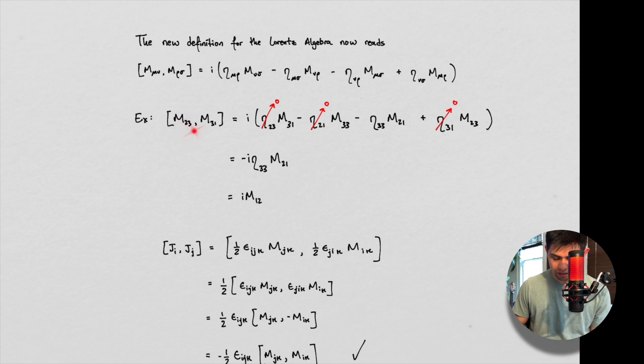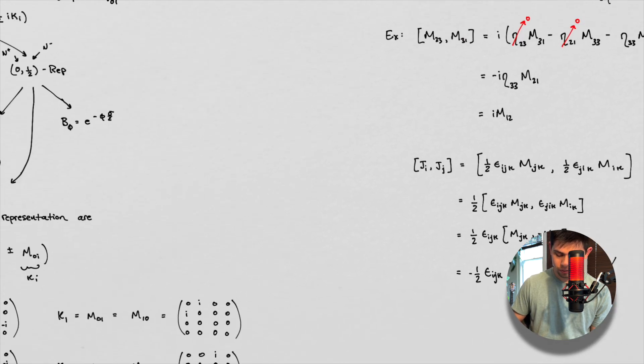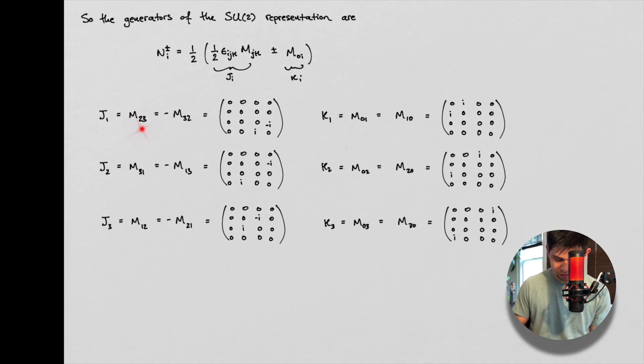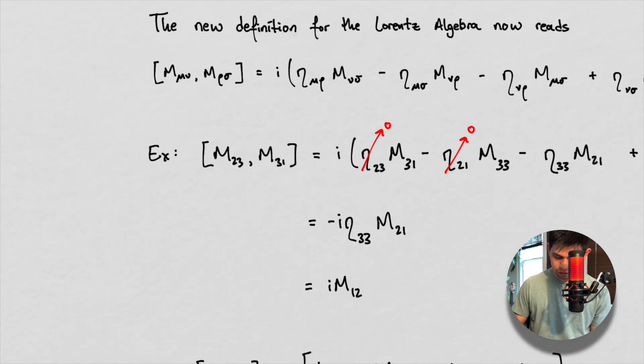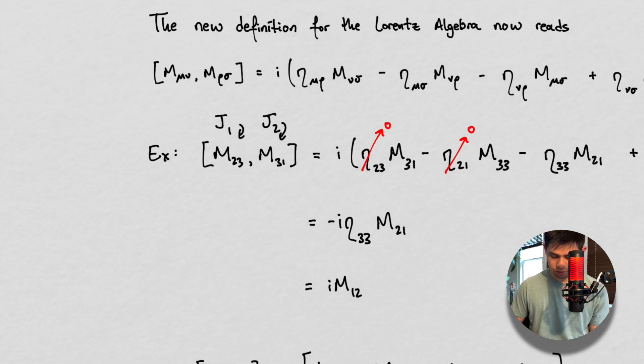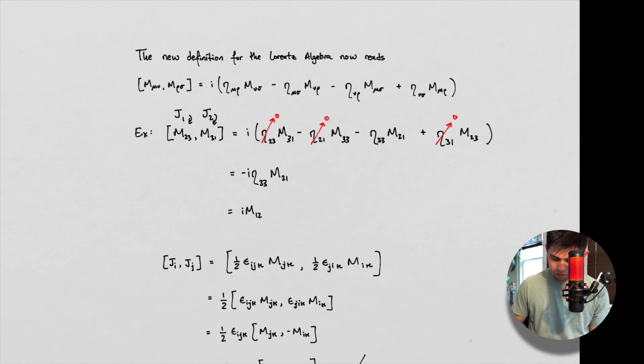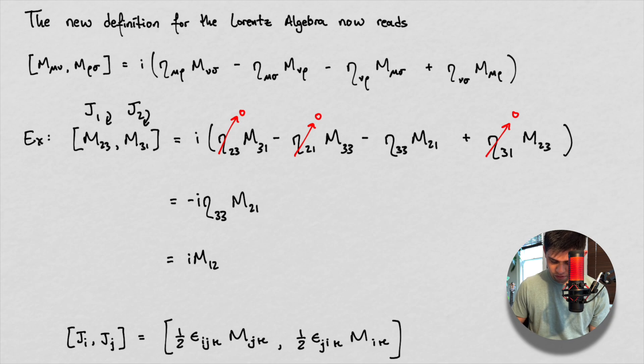So the example is, let's take a look at M23 and M31. What's that? That M23, so that's J1. And M31, that's J2. So I'm just going to write up here, J1 and J2. So we want to take the commutation between these two guys. So we fill in all of the subscripts. So 2 is mu. So here's our mu's.